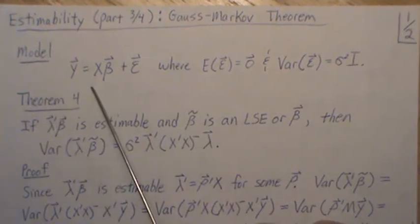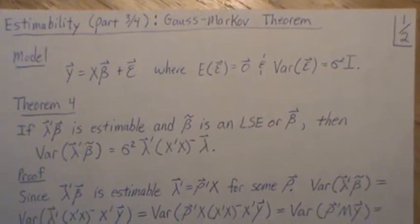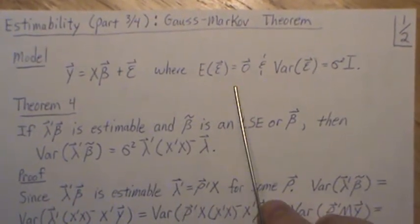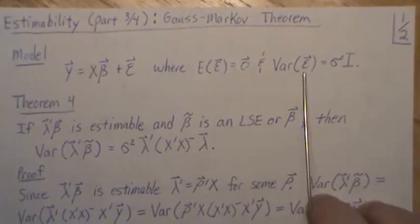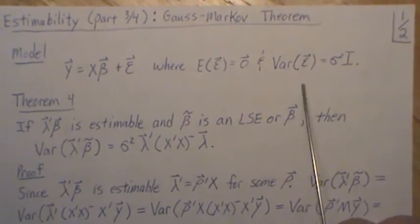As a reminder, we're in the setting where we have a model y equals X beta plus epsilon, where the mean of epsilon is zero, constant variance sigma squared, and covariances between any two epsilon is zero.